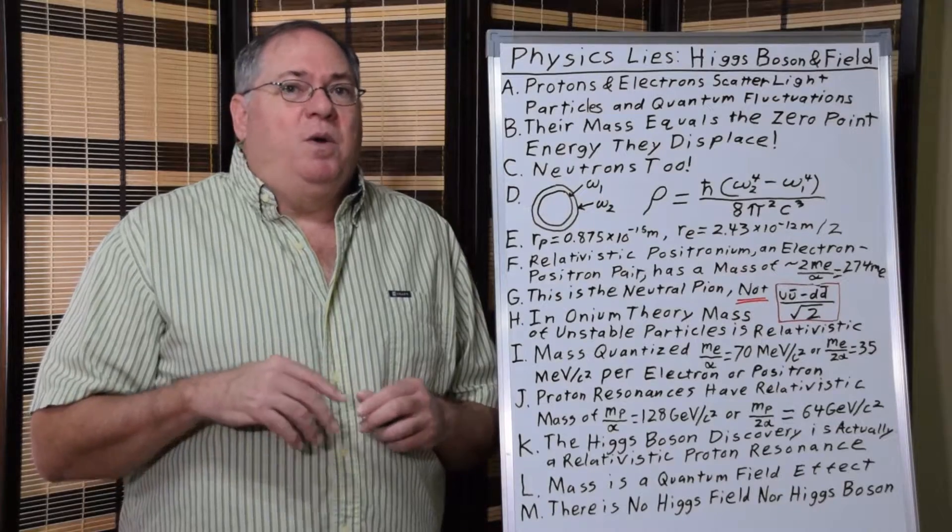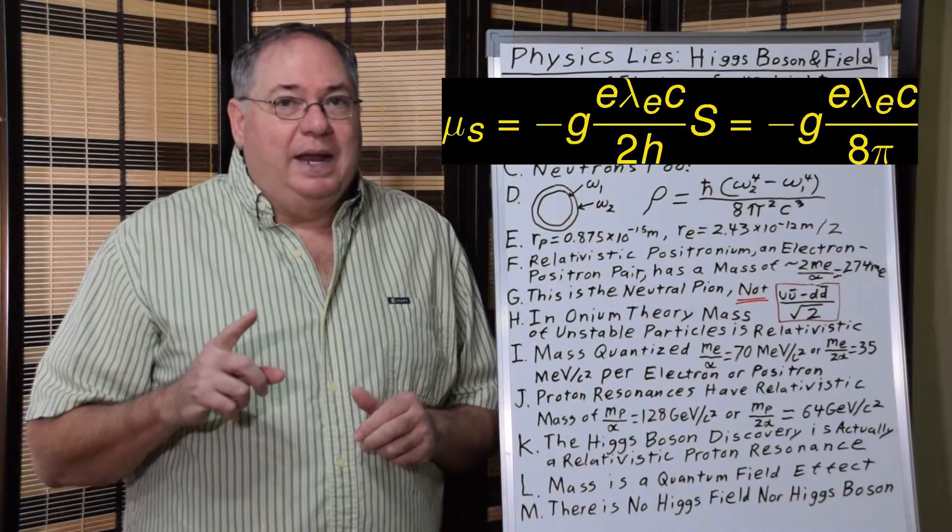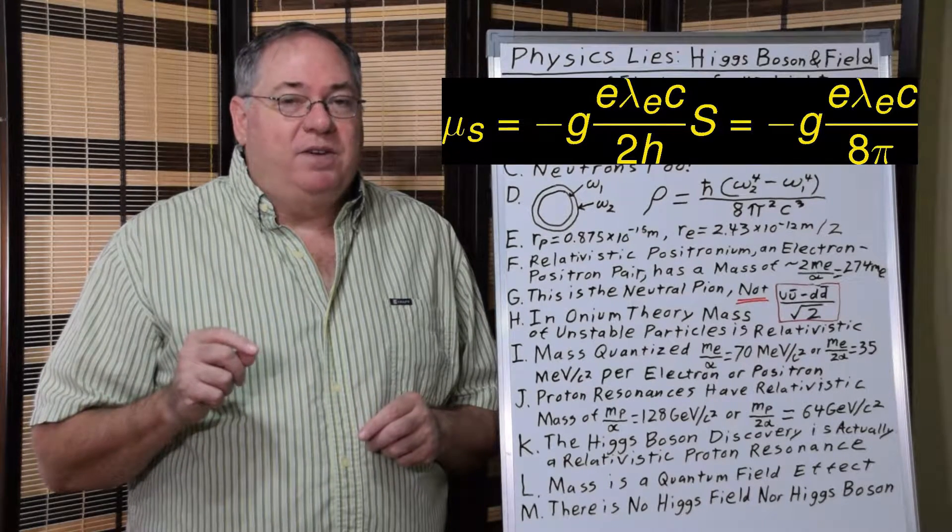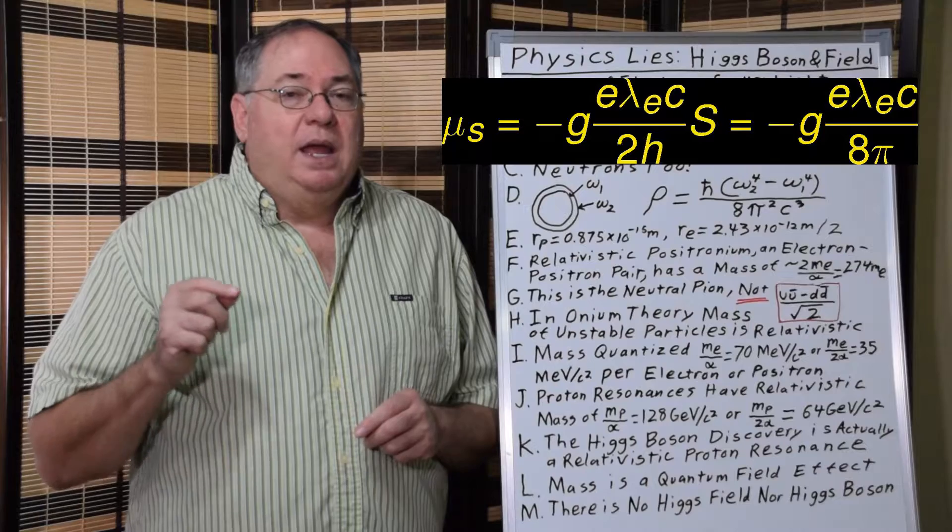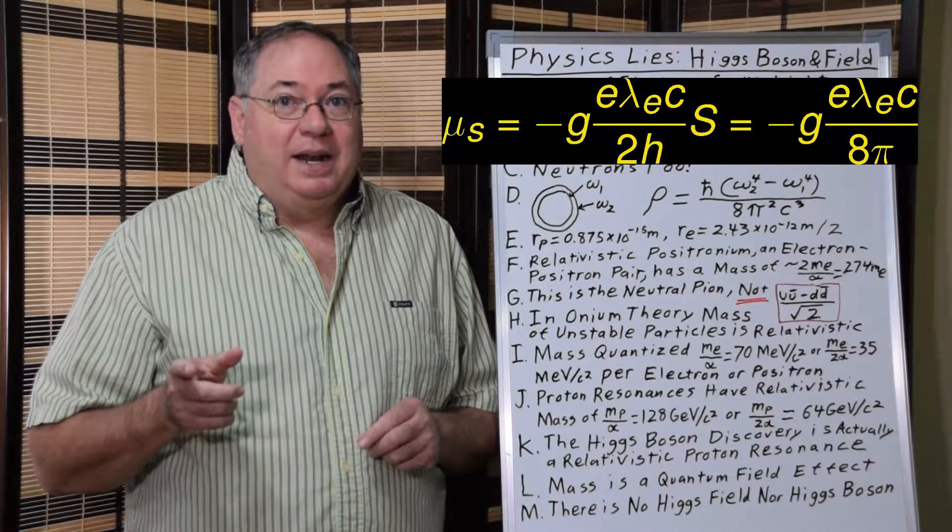And you may say, well, electrons don't have dimensions, but they do. And it's also necessary that electrons have dimensions to have magnetic moment. A point particle can't have magnetic moment.